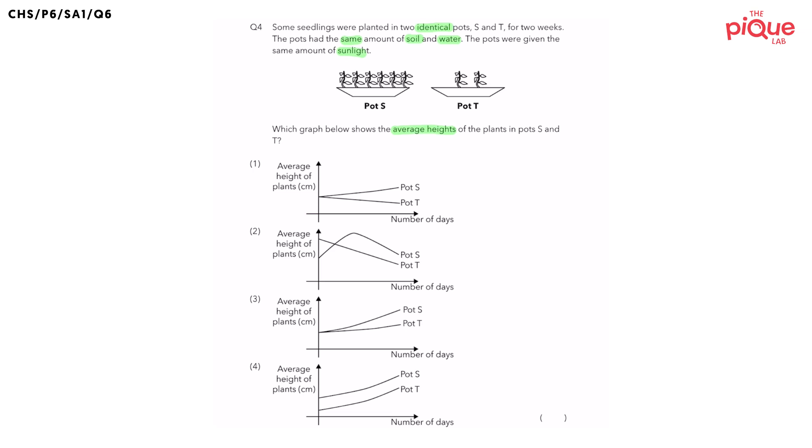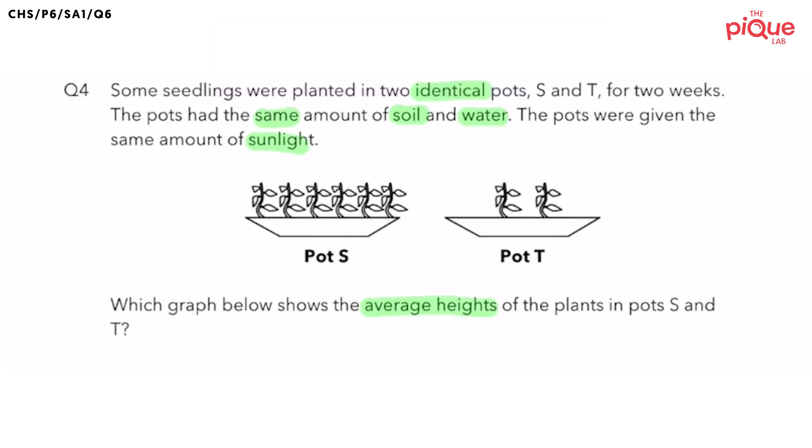So, since the question is asking us about the average heights, let's first take a look at the diagram over here. So right away, what do we notice about the average height of the plants in pots S and T?